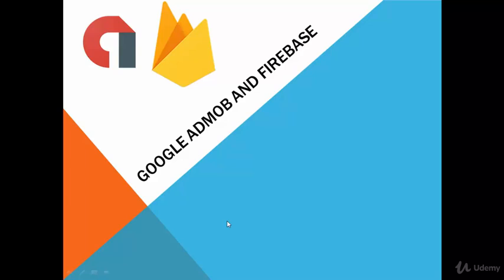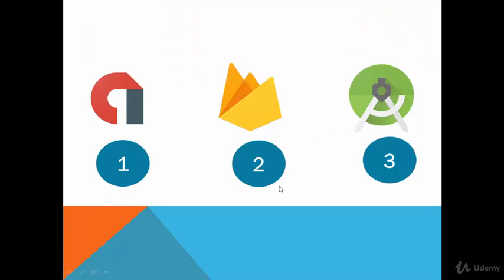Hello everyone! In this section we are going to talk about how we can add some advertisements to our application and how we can get some money from them. We are going to use three steps: number one, how to add an account in Google AdMob; number two, how to activate an account in Firebase; and number three, how to create an application in Android Studio and add those advertisements to our app.